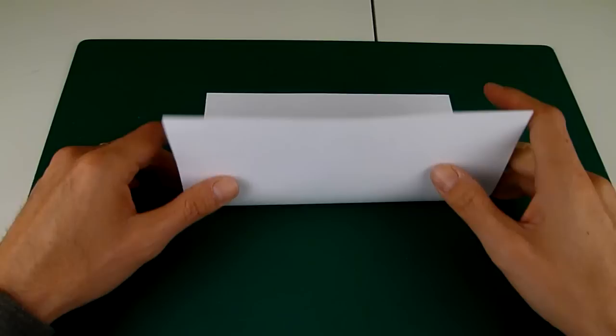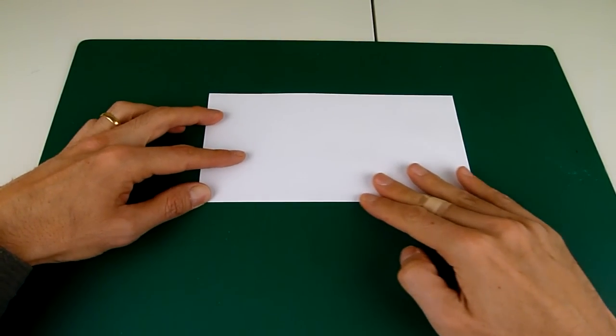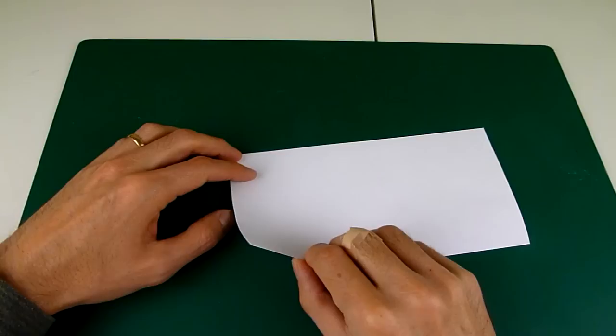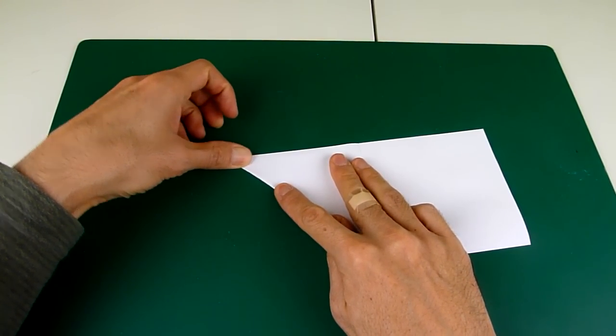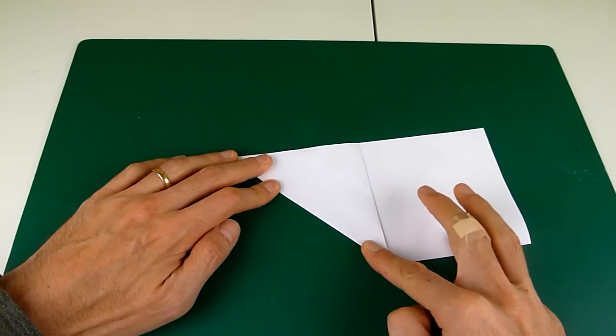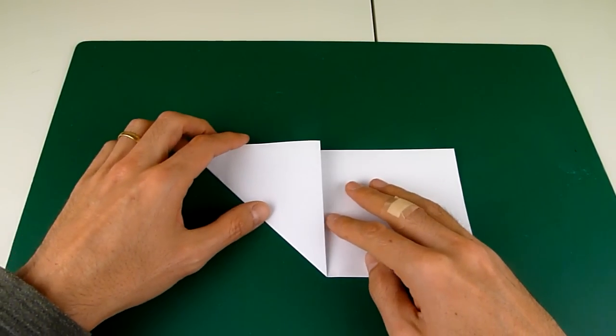So first fold your square in half like this, then take the bottom left corner here and fold it up to meet that top edge. Then unfold it.